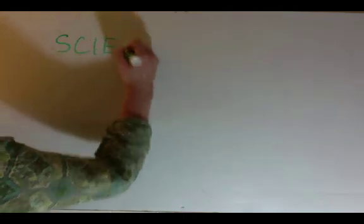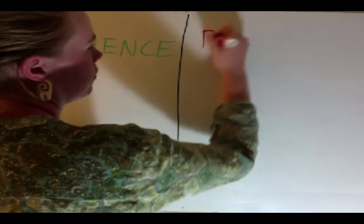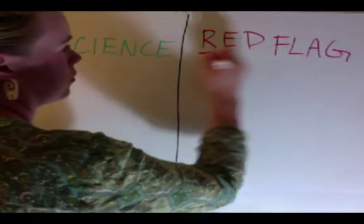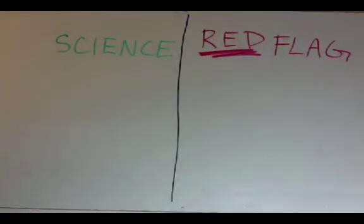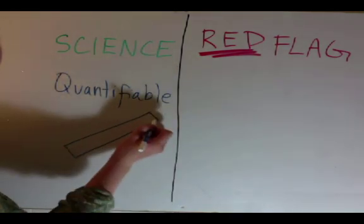Now that we know the difference between science and pseudoscience, let's look at what makes science credible and what some of the red flags are associated with pseudoscience. For example, science is quantifiable,